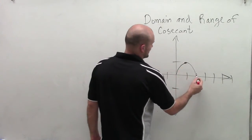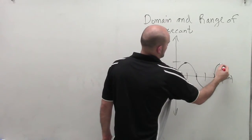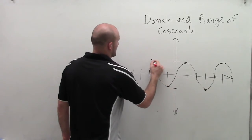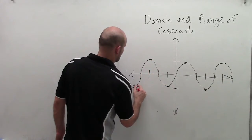And hopefully, by looking at the sine function, we know the graph kind of looks like this, right? And we use this to help us graph the cosecant function.